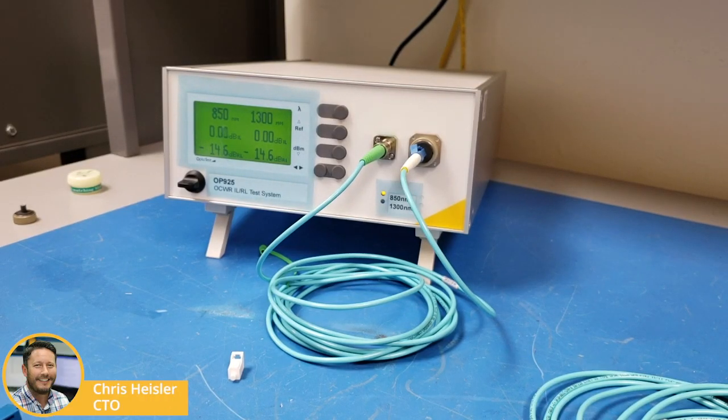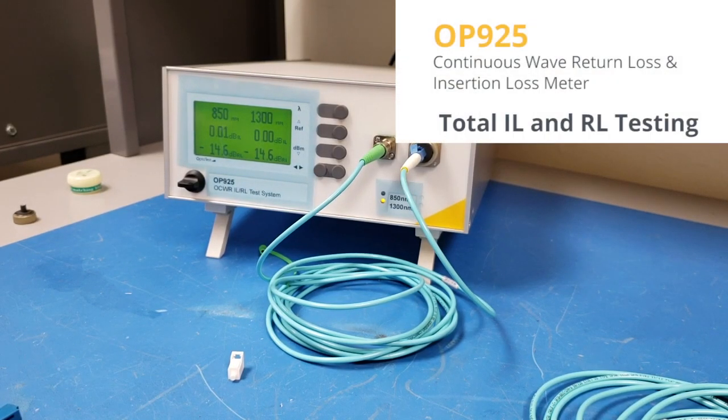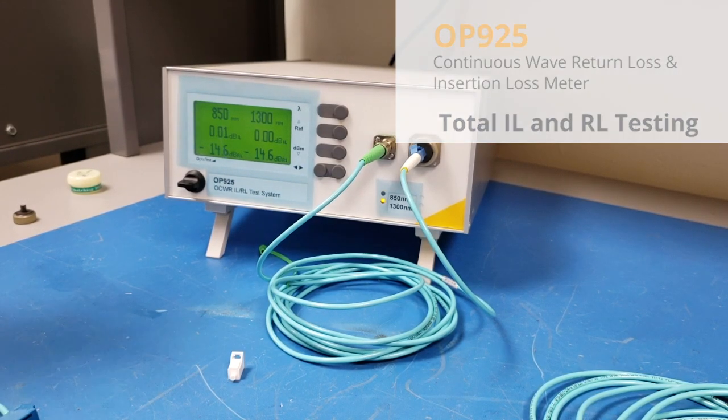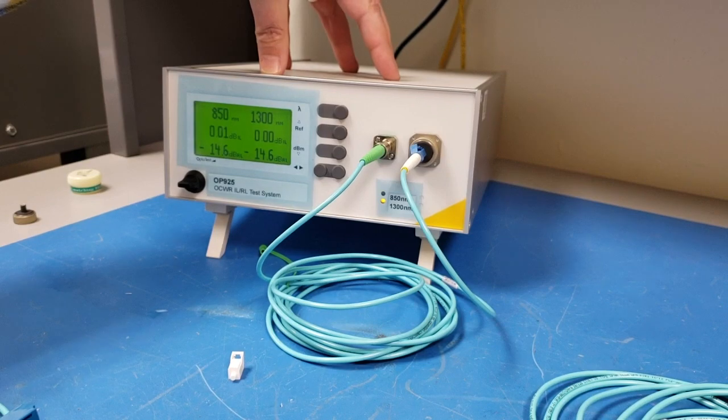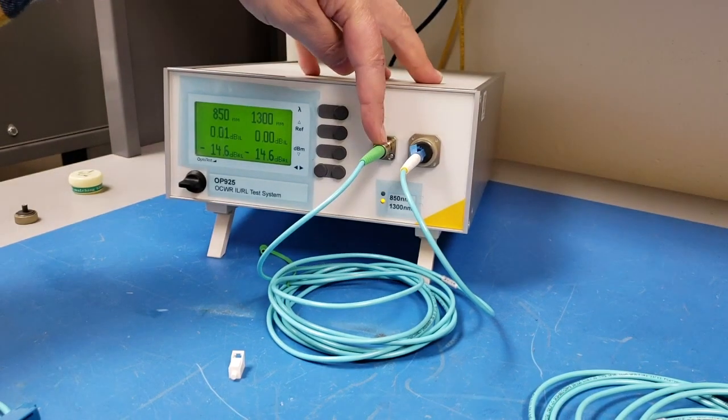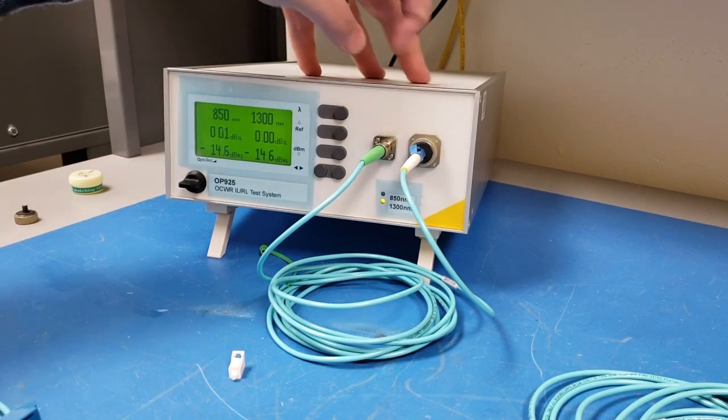Next we're going to look at testing the total IL and total RL of a DUT using the OP925. To do this, you're going to need to start with your instrument properly referenced with your launch cord connected from the source to the power meter.